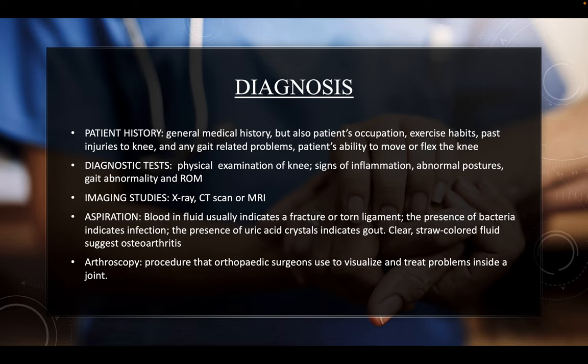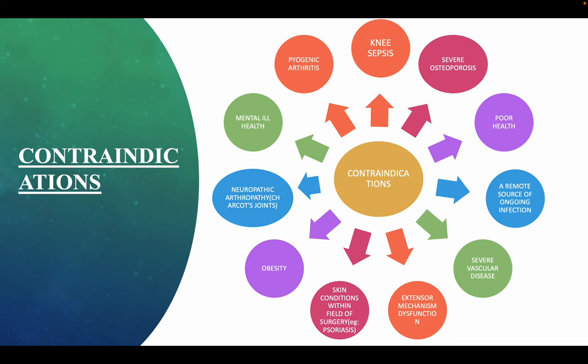Imaging studies include X-ray, CT scan, or MRI, through which you can visualize the prosthesis. Aspiration findings: blood in the fluid usually indicates a fracture or torn ligament; presence of bacteria indicates infection; uric acid crystals indicate gout; clear straw-colored fluid suggests osteoarthritis. Arthroscopy is a procedure orthopedic surgeons use to visualize and treat problems inside a joint.